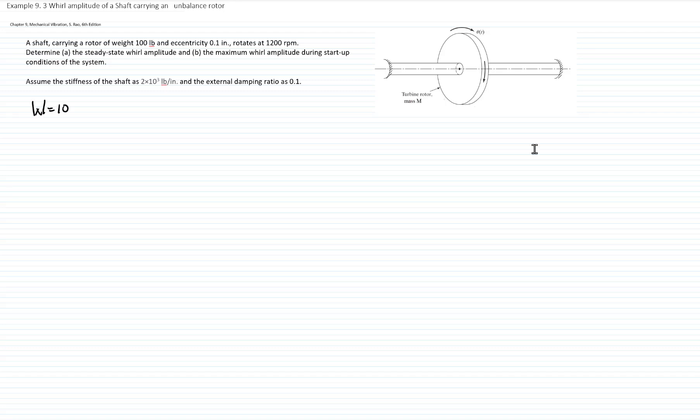Let me write down the weight: 100 pounds. We have to divide the weight by gravity in order to get the mass. Remember that we are working in inches, so the gravity is 386.4 inches per second squared. And that gives me a mass of 0.2588 pounds second squared over inches.